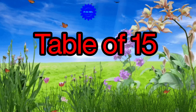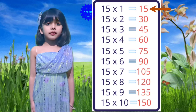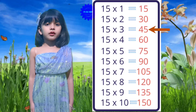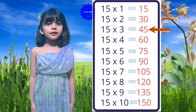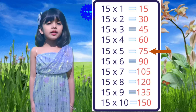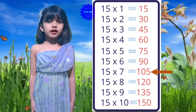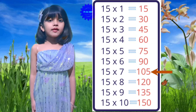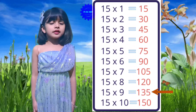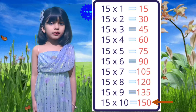Table of 15: 15 ones are 15, 15 twos are 30, 15 threes are 45, 15 fours are 60, 15 fives are 75, 15 sixes are 90, 15 sevens are 105, 15 eights are 120, 15 nines are 135, 15 tens are 150.